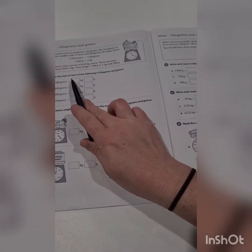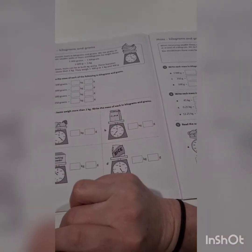Hi guys, today we're going to look at the kilograms and grams mass worksheet. It's a little bit trickier than the mass worksheet you did yesterday. First question is to write the mass of each of the following in kilograms and grams.